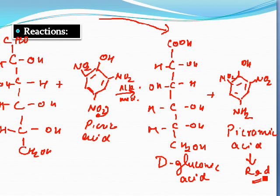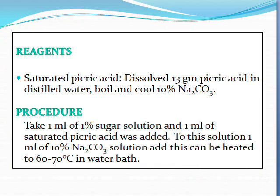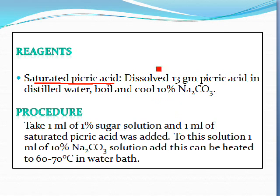This is the whole reaction for the picric acid test. Now let's look at the procedure. The requirements for the picric acid test are: a saturated picric acid solution, which is made by dissolving 13 grams of picric acid in distilled water and boiling.